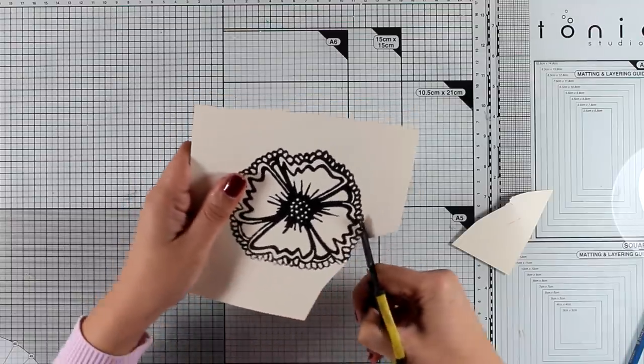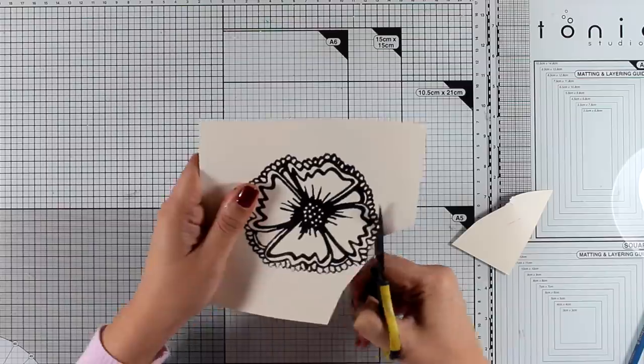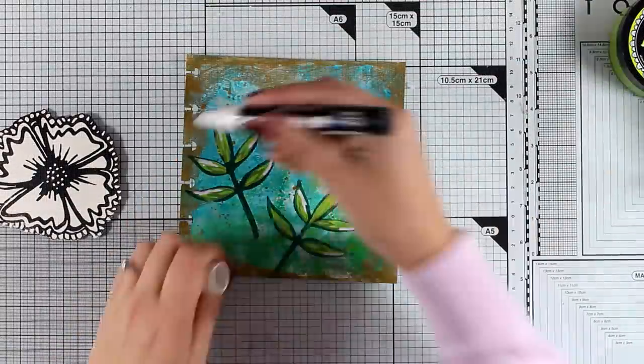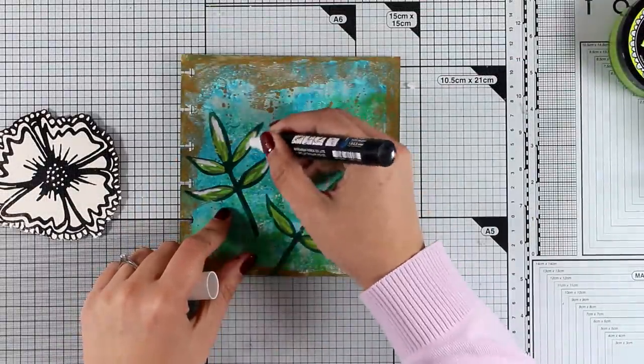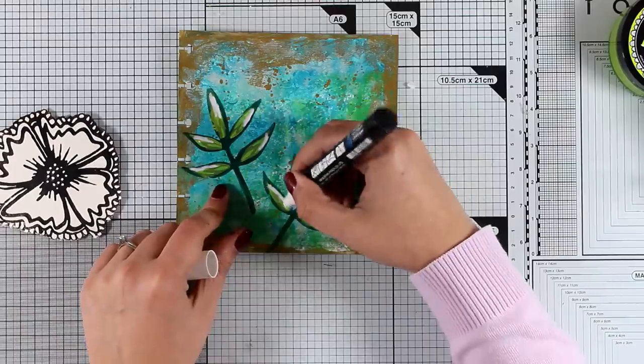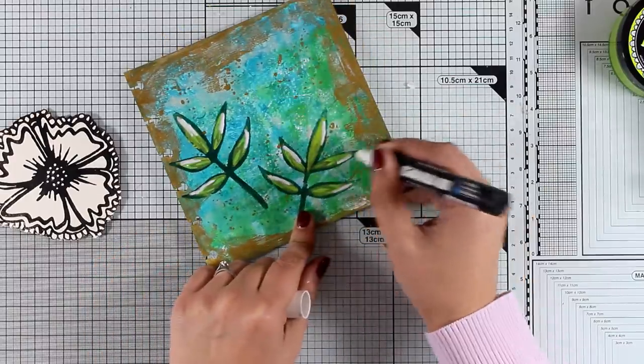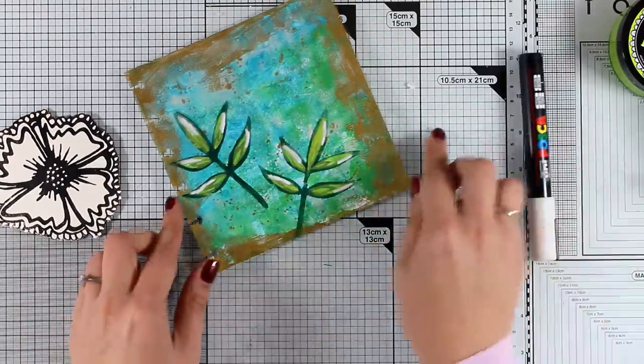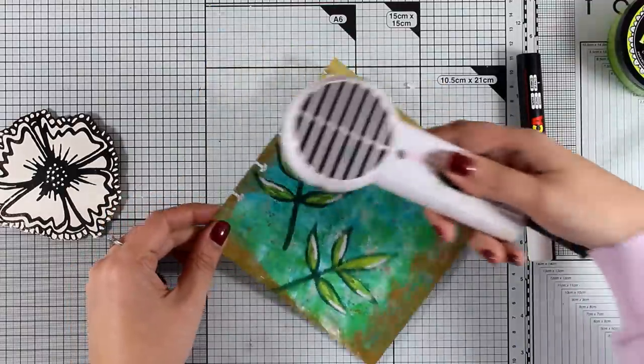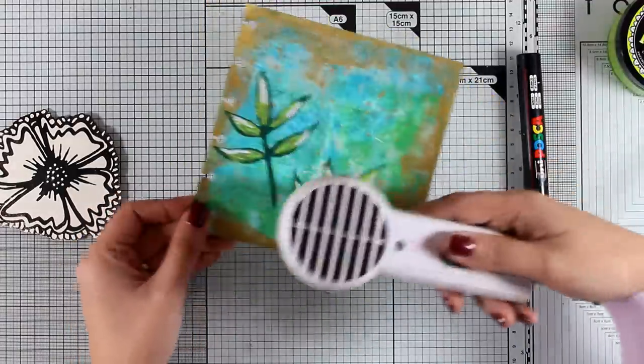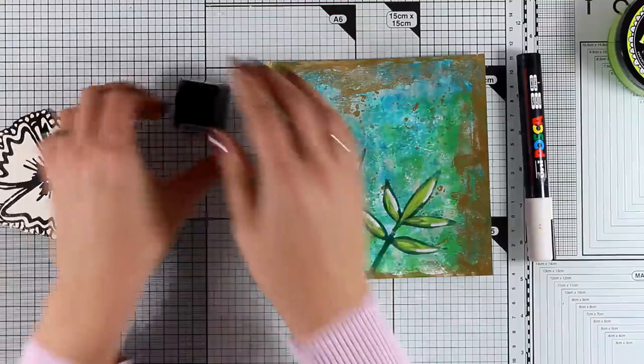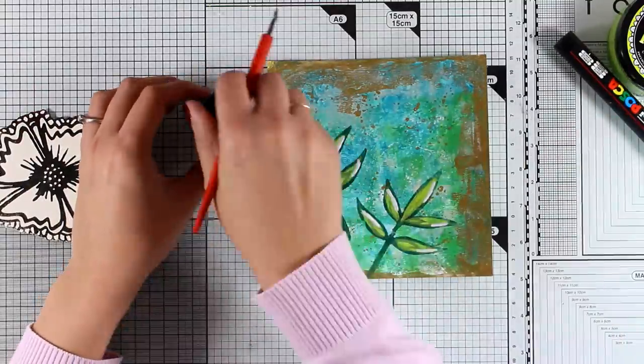I used a brush with Fresh Lime paint by Delusions to fill in the leaves, so you can see that light green inside the leaves. Then with my Posca white marker, I did some highlights. Now I'm going to move on and do some doodling.